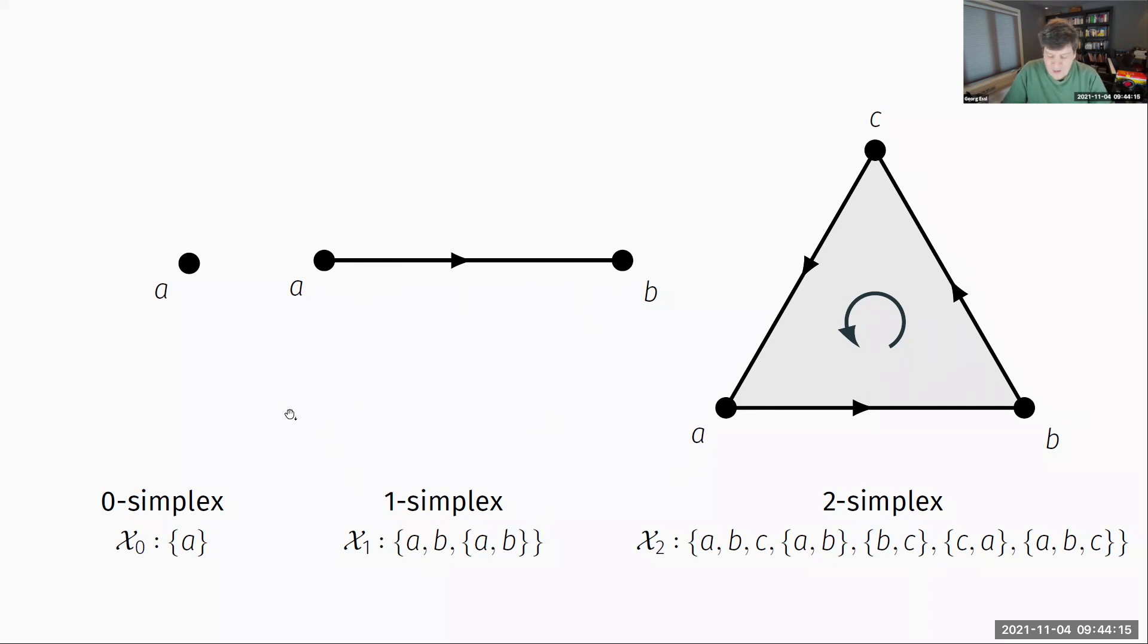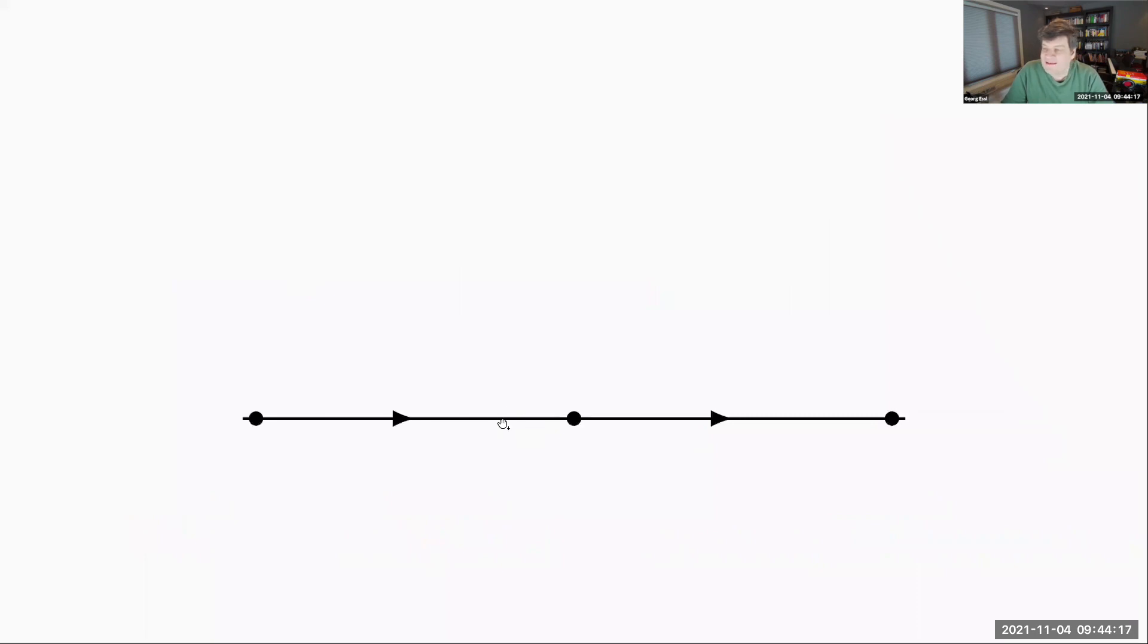A simplicial complex is the connection of these things along shared simplices. Given that we don't particularly care about the simplicial complex, but the construction on top of it, we're going to use the simplest possible case. This here we're going to call a line complex. This is just the alternation of zero simplices and one simplices forming something that looks like the real line.